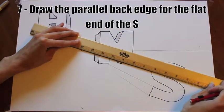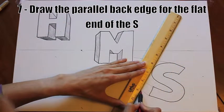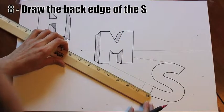Now you just have to draw your parallel back edges. The end of your S is a straight line, but it's probably slightly diagonal like mine. Copy the angle of your S and transfer it to the back edge.